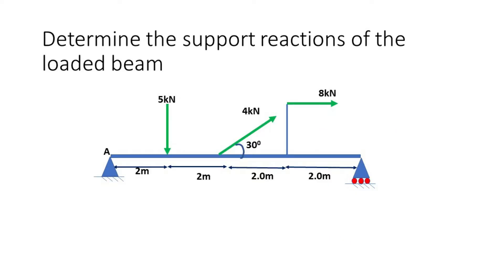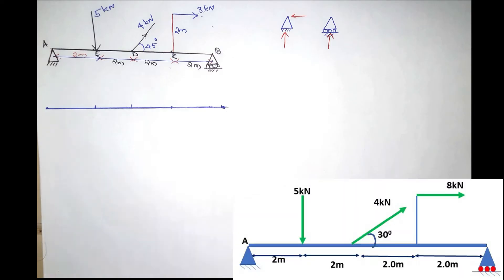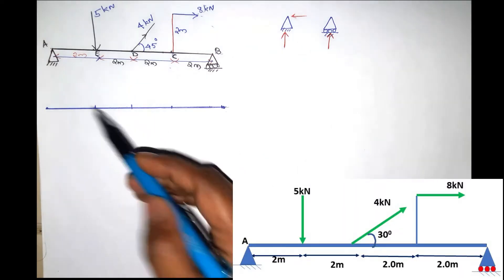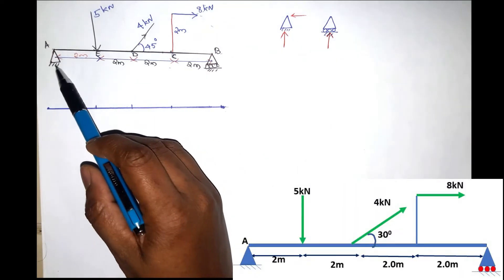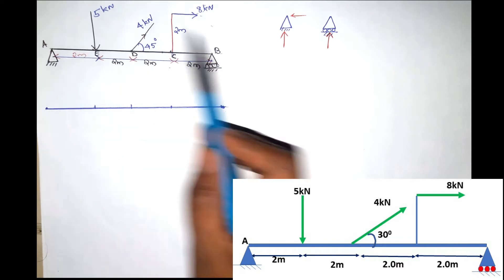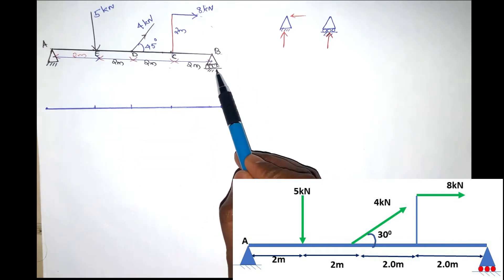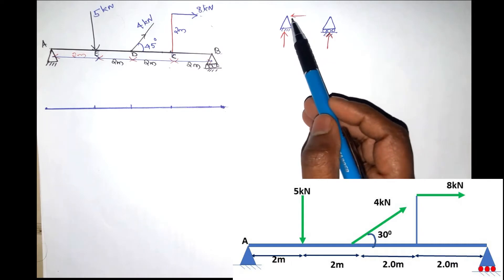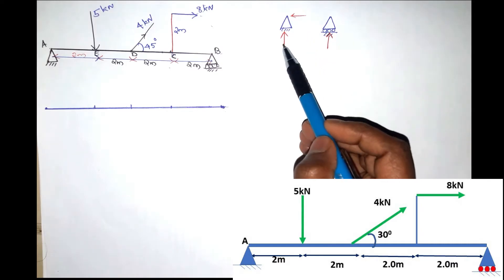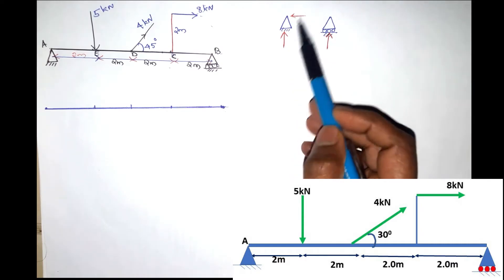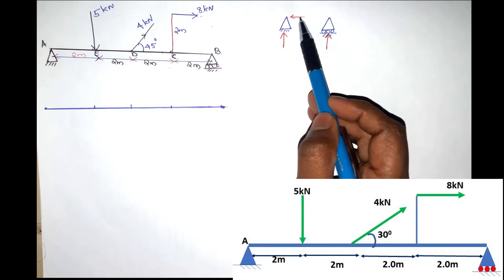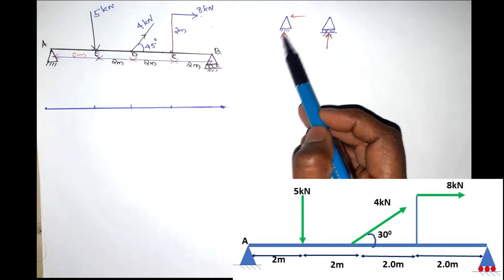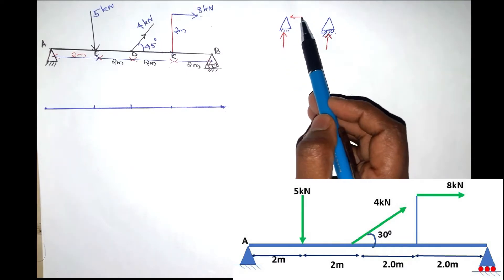Question 1: What are the support reactions at A and B? If you have a support reaction, you will have a vertical reaction and a horizontal reaction. You will also have a horizontal movement and a vertical movement.